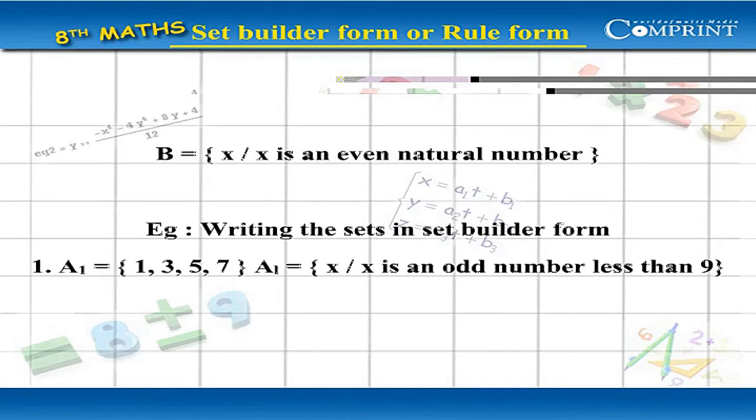Example: writing the sets in set builder form. A1 equals the set of 1, 3, 5, 7. A1 equals x by x is an odd number less than 9.